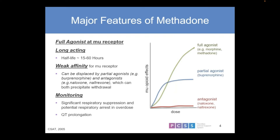Buprenorphine has intrinsic activity up to around 40% and then tapers off, creating the ceiling effect that is often talked about. Because buprenorphine has a higher affinity to the full mu receptor, if buprenorphine is given when opioid activation is above the buprenorphine ceiling, it would precipitously take a patient down to that level of activation and they would feel as if they're going into withdrawal.